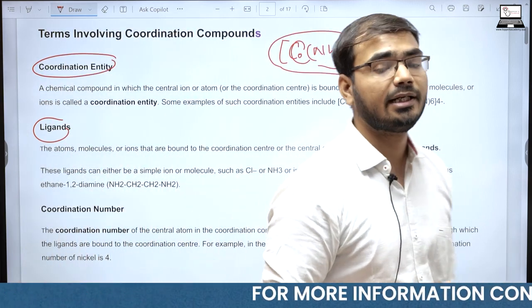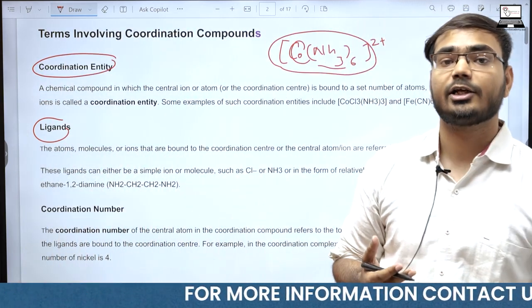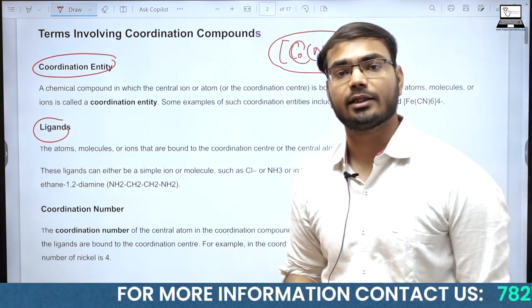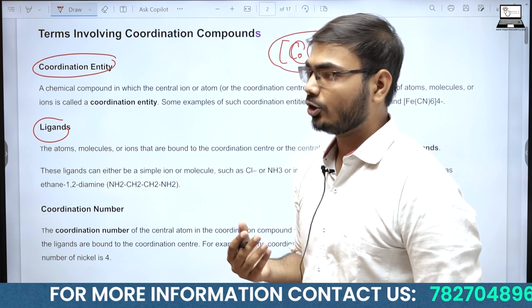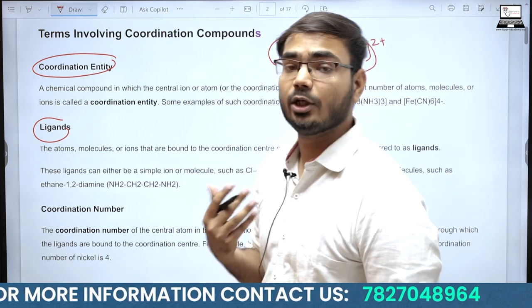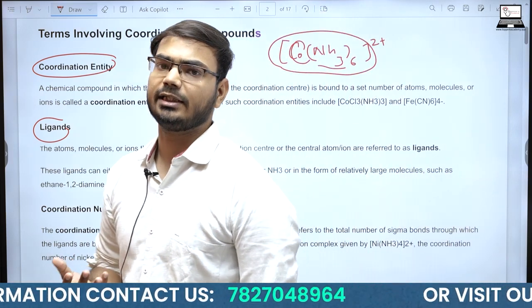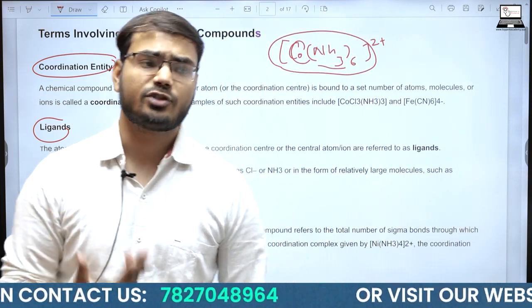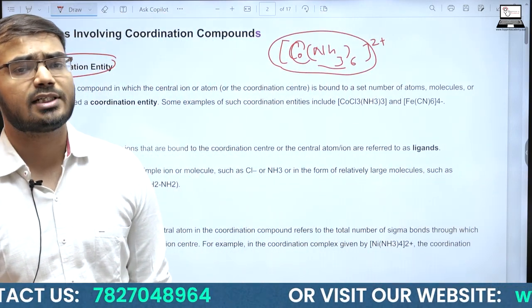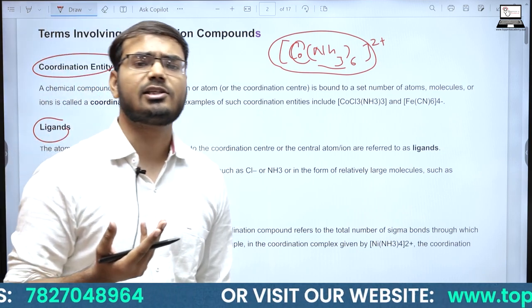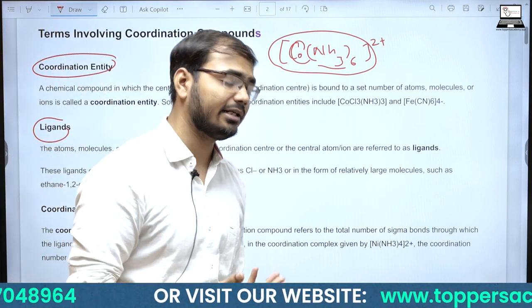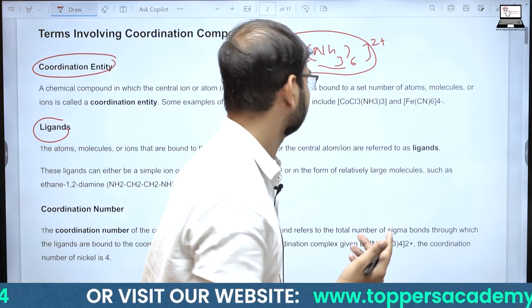Ligand वो substance है जो किसी central atom को अपने electrons donate कर दे। यह electrons lone pairs की form में या negative charge की form में donate किए जा सकते हैं।